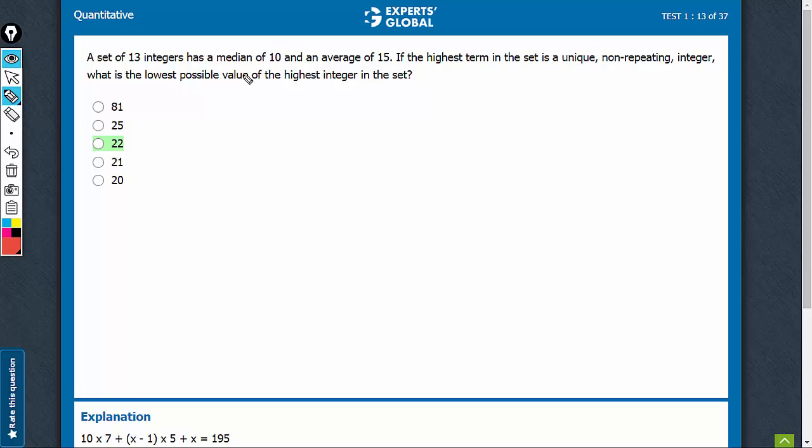13 integers have a median of 10. So 1, 2, 3, 4, 5, 6, 7, 8, 9, 10, 11, 12, 13. 3, 4, 5, 6, 7. This is the seventh term, this one.